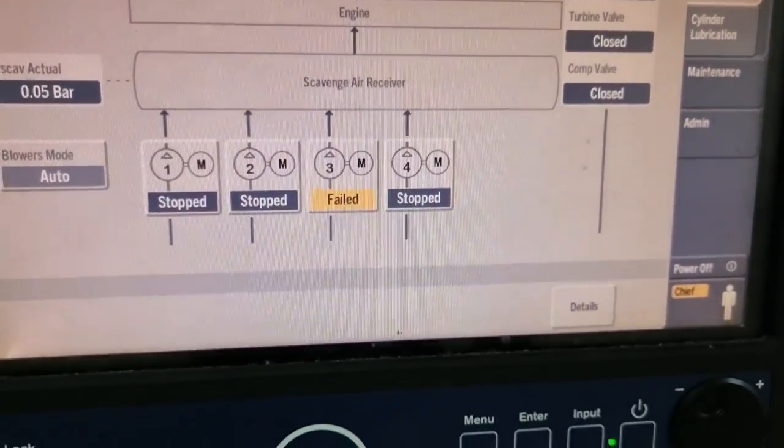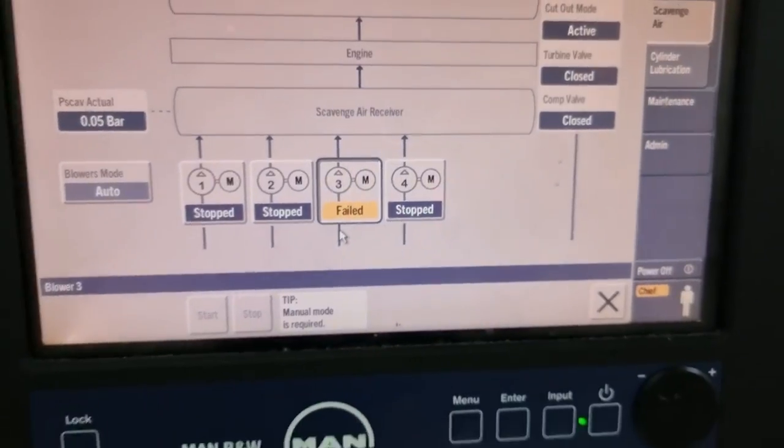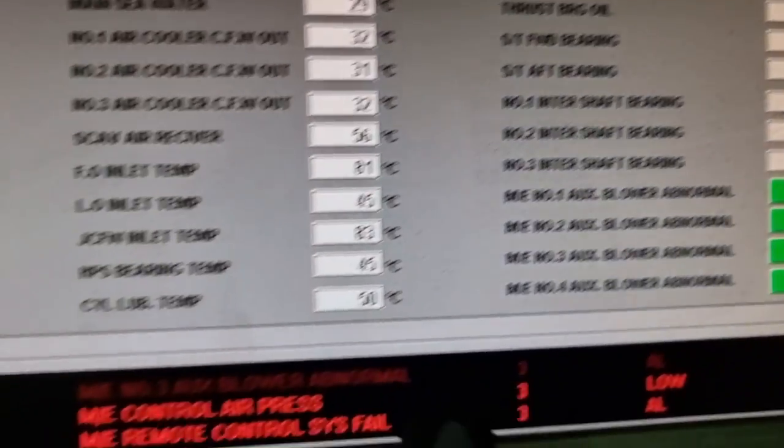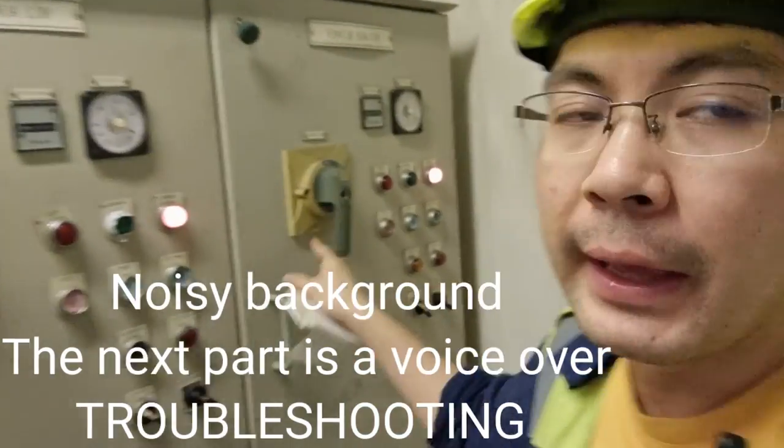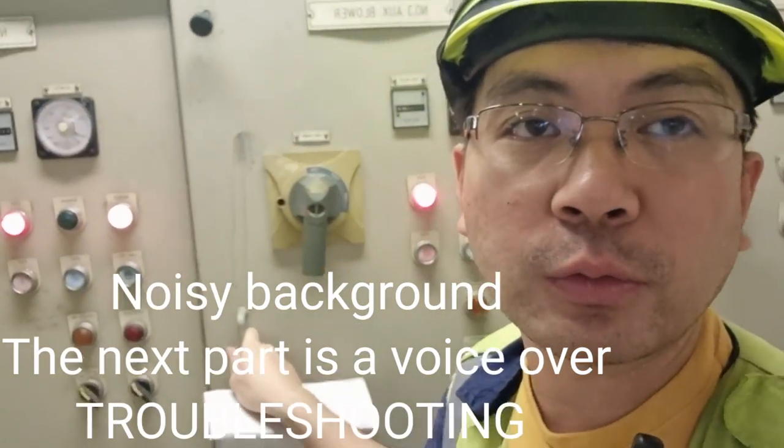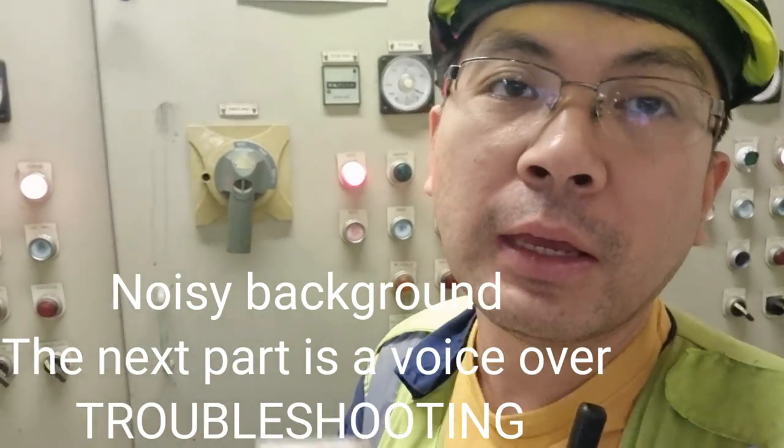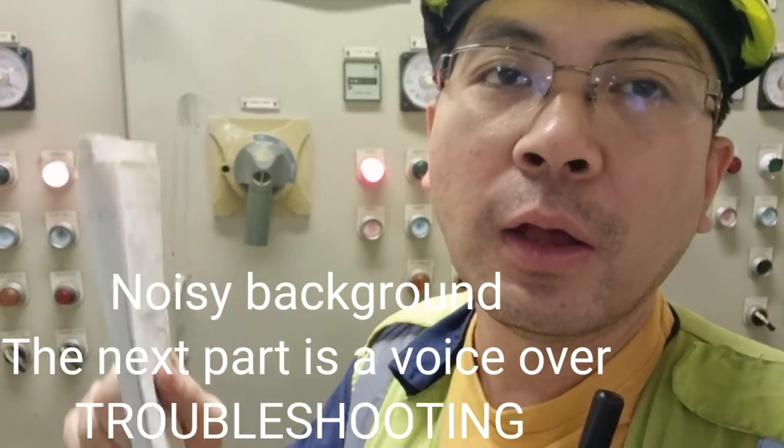Today's troubleshooting is about our auxiliary blower. We have an abnormal alarm in our Aconis as well as in our MOP. We have four blowers on board, and number three is not working. We'll be checking it right now using the wiring diagram to see from supply all the way to the load.